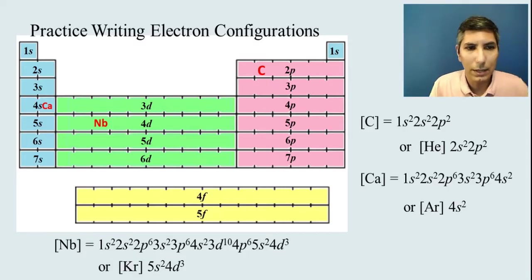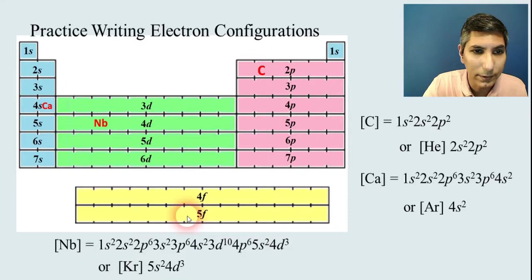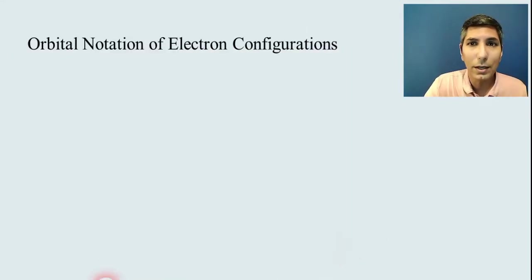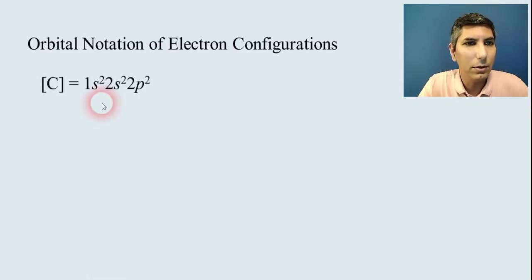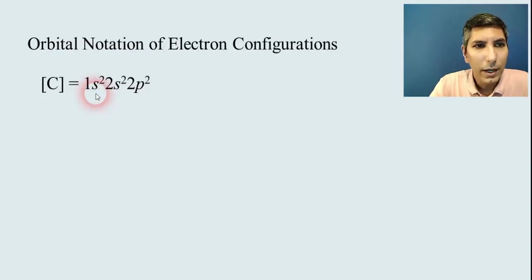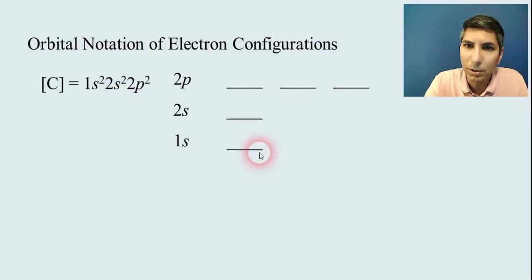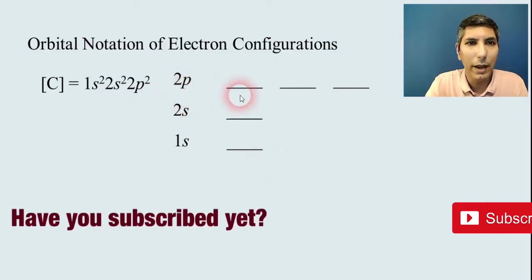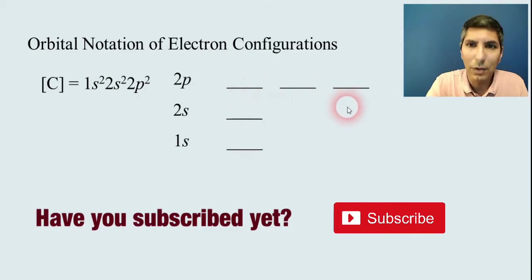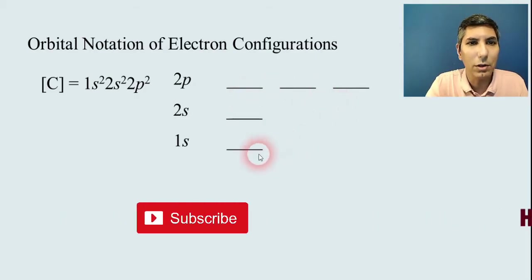So that's how you can write an electron configuration. Now maybe you're wondering what does all this stuff mean—the s's and the p's and the d's and sometimes the f's as you see here at the bottom of the table. Well, we can actually write an orbital notation. Now the way this works is if we use the electron configuration for carbon, each little section here—we can draw it with lines. 1s, 2s, and 2p.